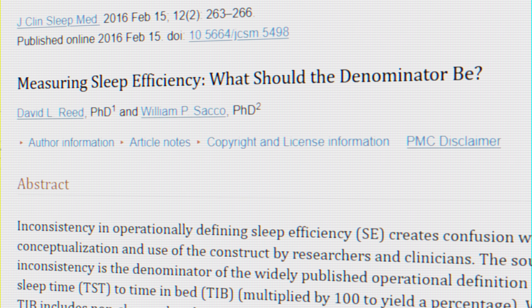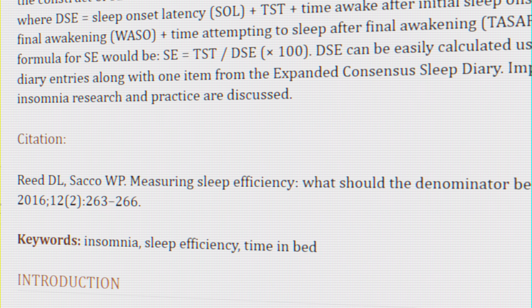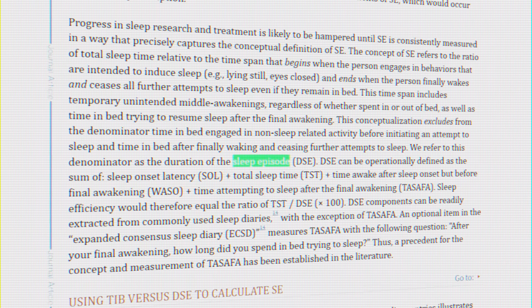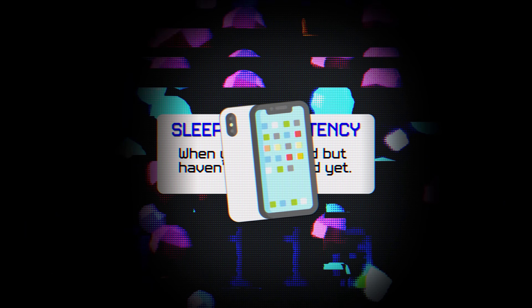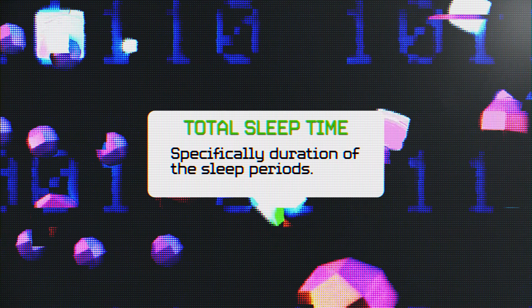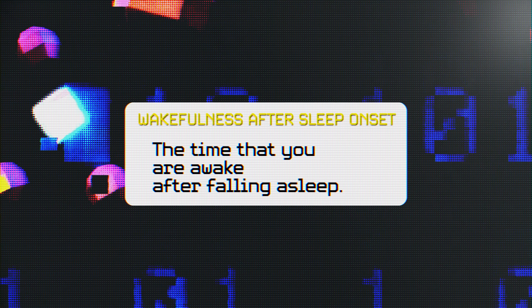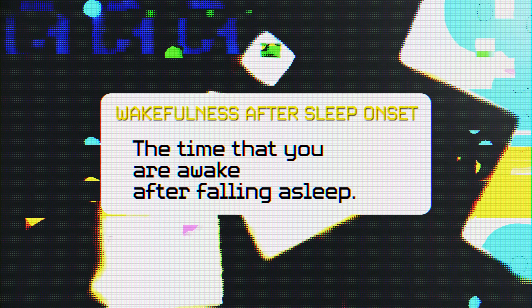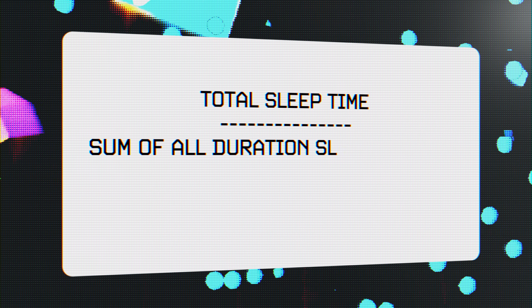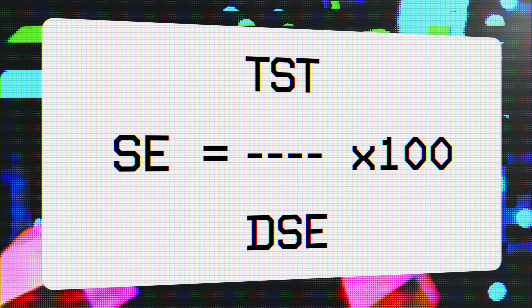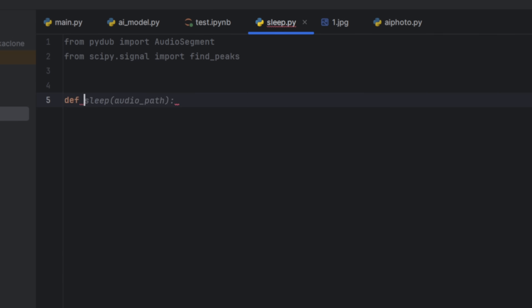Now here's where things get a little bit technical. I found this study called 'Measuring Sleep Efficiency.' Doctors David L. Reed and William P. Sacco define a duration of a sleep episode — basically how long you actually sleep before you wake up — measured by several factors: sleep onset latency (when you go to bed but haven't fallen asleep yet), total sleep time, wakefulness after sleep onset (time you're awake after falling asleep), and time spent trying to sleep after the final awakening. The equation to determine sleep quality is: SC = TST / DSE × 100, where SC is sleep continuity, TST is total sleep time, and DSE is duration of sleep episodes. So let's add some Python code to try and do this.